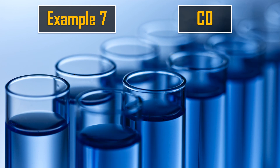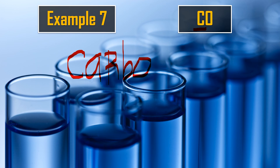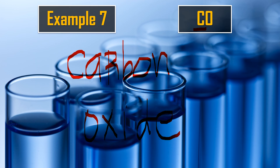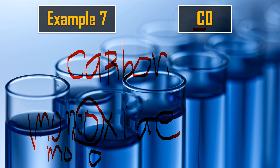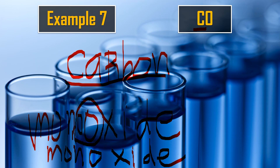For the next example, we have CO — carbon and oxygen. Carbon is the first element; we use its original name and, per the rule, we do not put mono for the first element if its subscript is 1. Oxygen is the second element; its IDE name is oxide. It has no subscript, meaning it's 1, so it would be mono. Since 'mono' + 'oxide' gives 'monooxide,' we apply rule five and drop the extra 'o,' giving 'monoxide.' So the name for this compound is carbon monoxide.